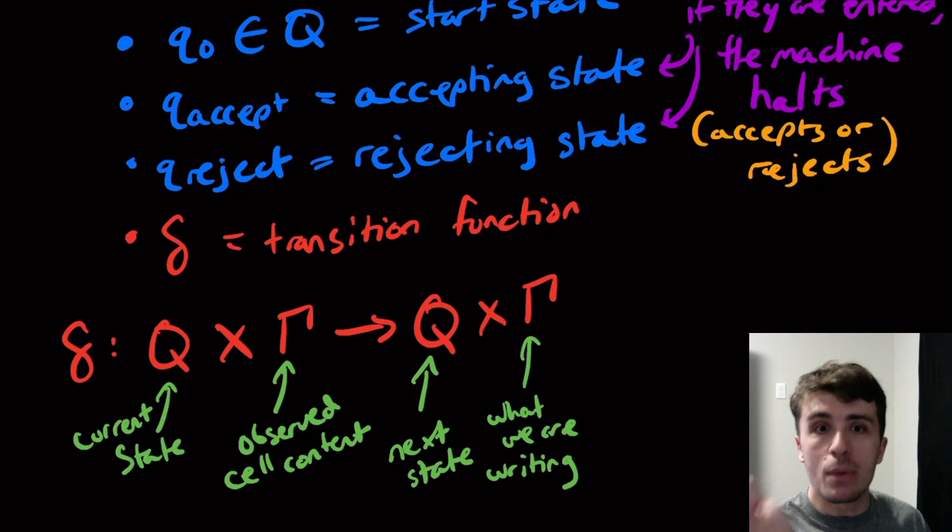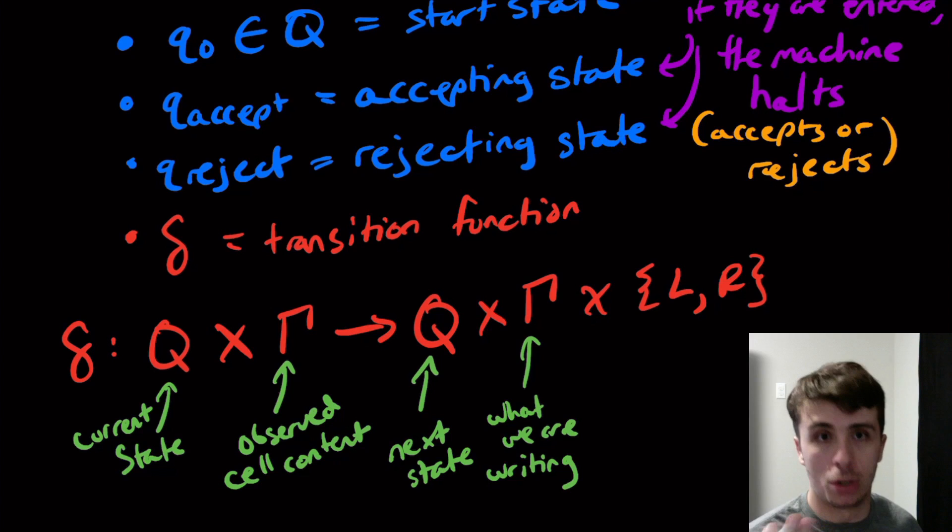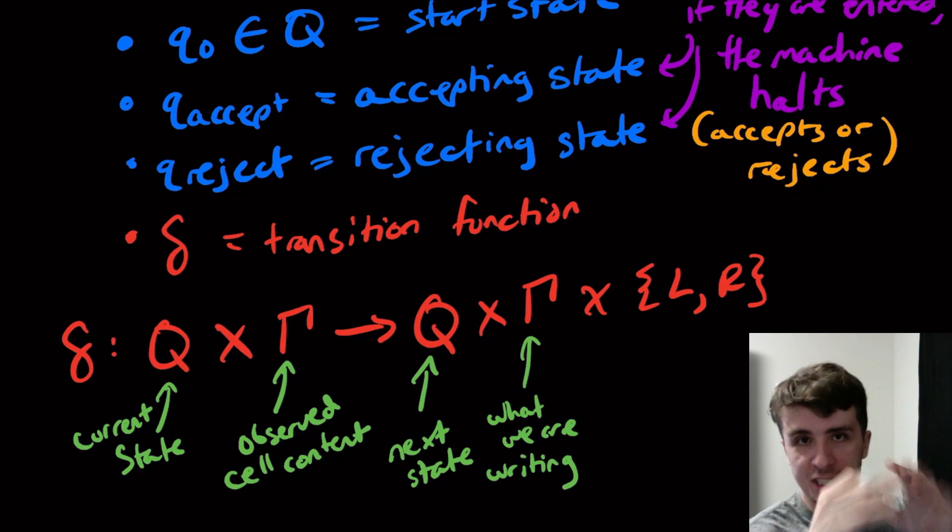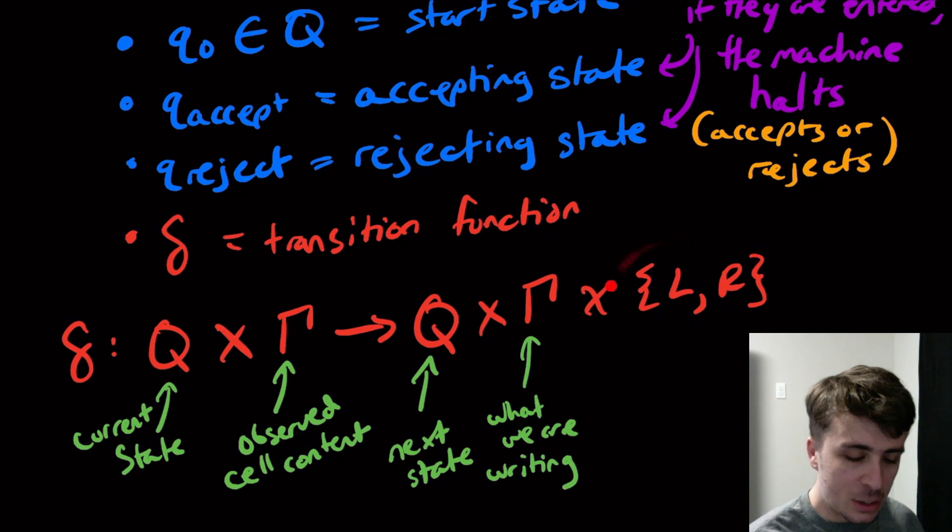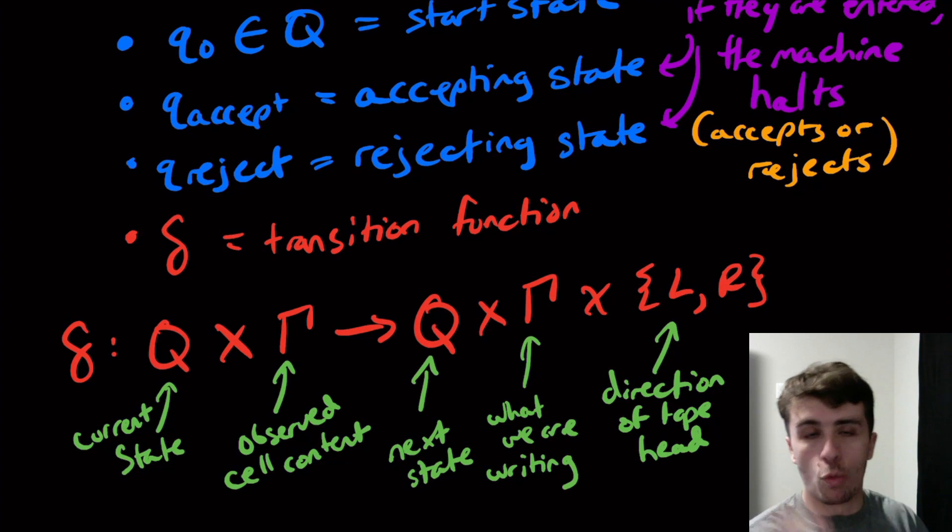After that, we need to figure out whether to move left or right. I'm going to put cross the set which contains two special symbols—not anything on the input or tape alphabet. It's just to specify the transition function and make Turing machine state diagrams later. We choose either left or right. This will be the direction of the tape head, whether it moves left or right.